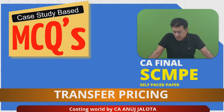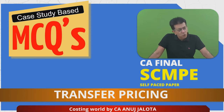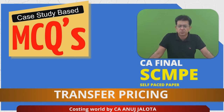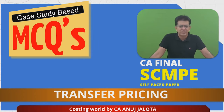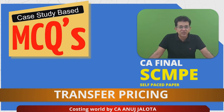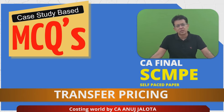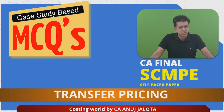Our helpline for doubts — our Telegram ID at the rate AJNext — is always there for your reference for any doubt. Our full paper is available at a very nominal price; details are in the description. The course will automatically start, and my solutions will be available in the download section for you to download and print.